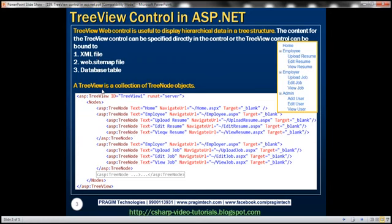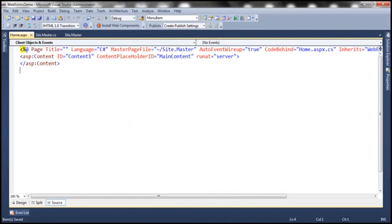A TreeView control is a collection of tree node objects. Let's understand using this TreeView control with an example. Let's flip to Visual Studio.